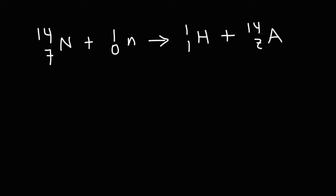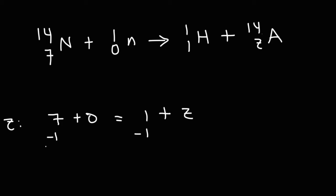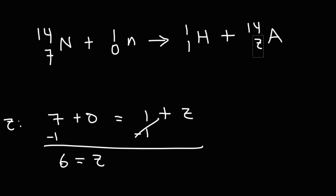Now let's calculate the atomic number Z. Focusing on the bottom numbers, on the left we have 7 plus 0, and that equals 1 plus Z. Subtracting both sides by 1, we can see that Z is 6. The element with an atomic number of 6 is carbon. So when nitrogen-14 in the atmosphere is bombarded by neutrons, it produces hydrogen and regenerates the carbon-14 isotope.